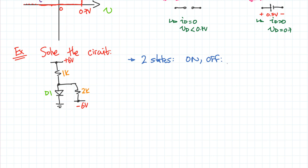I'm going to start by assuming the diode is off. I'll redraw the circuit according to that assumption and label the currents I'm interested in: this current is I1 and this current is I2. If the diode is off, it's just an open circuit according to our model.